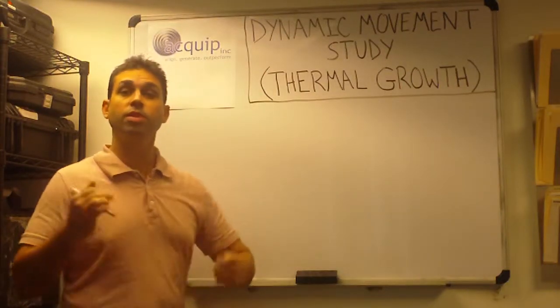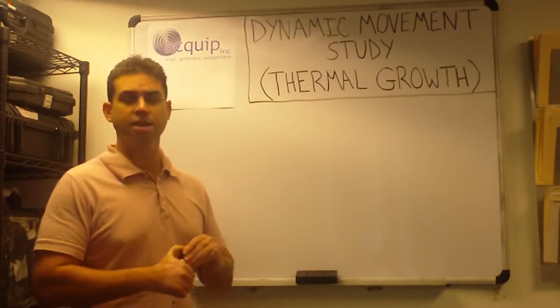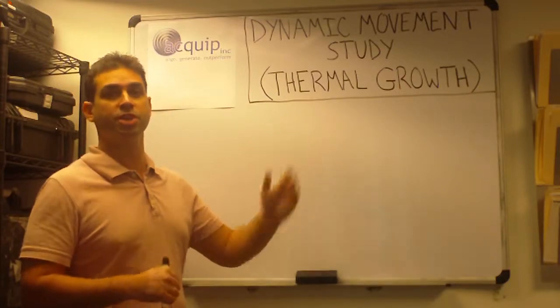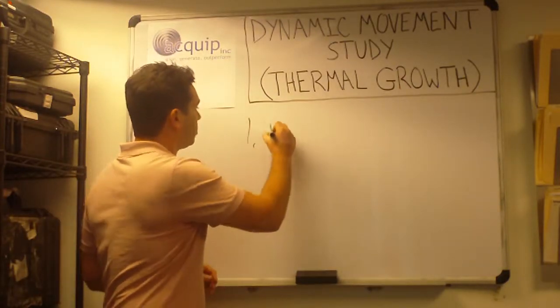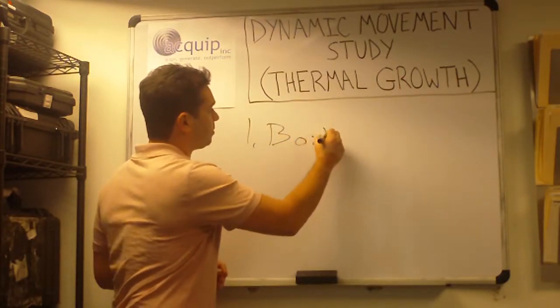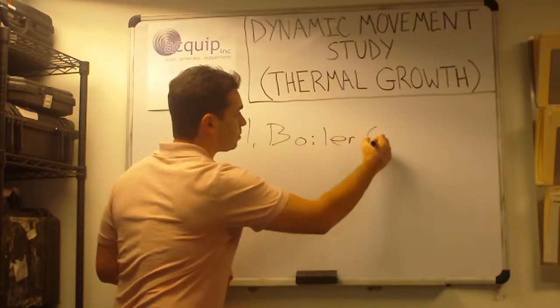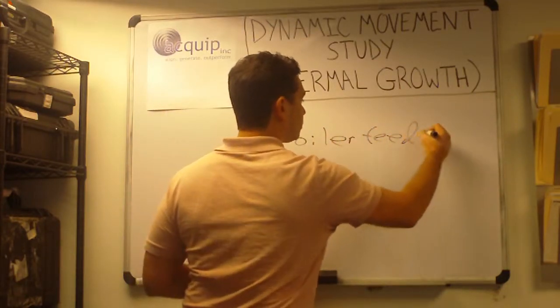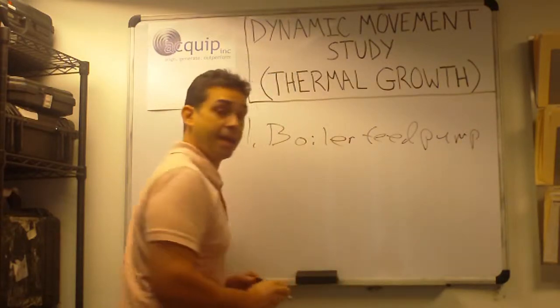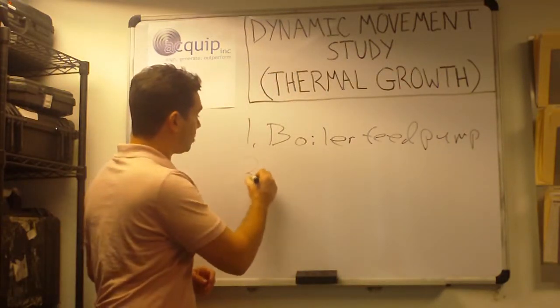So, the two most common things that we want to perform a dynamic movement study on are a boiler feed pump and a gas turbine.